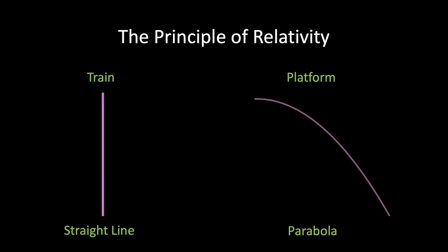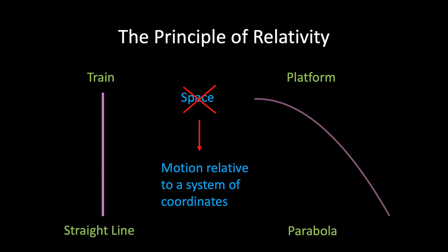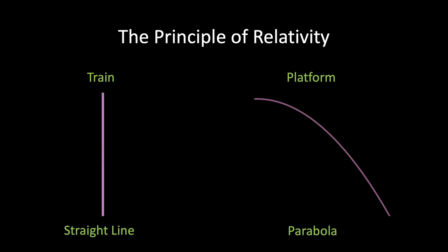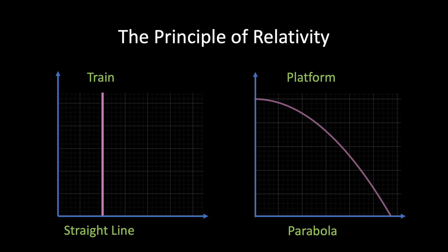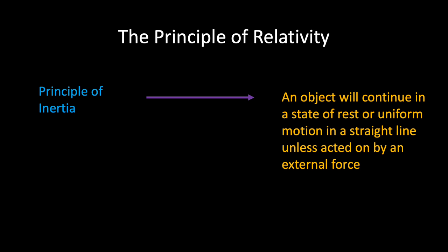We will stop using the vague word 'space' and rather talk about motion relative to a system of coordinates, which is useful for a mathematical description. The stone traverses a straight line relative to a system of coordinates rigidly attached to the train, but relative to a system of coordinates rigidly attached to the ground, it describes a parabolic curve. There is no such thing as an independently existing path, but only a path relative to a particular frame of reference. The fundamental law of the mechanics of Galileo and Newton states that a body removed sufficiently far from other bodies continues in a state of rest or uniform motion in a straight line, unless acted on by an external force.